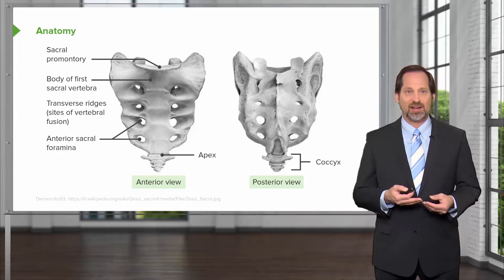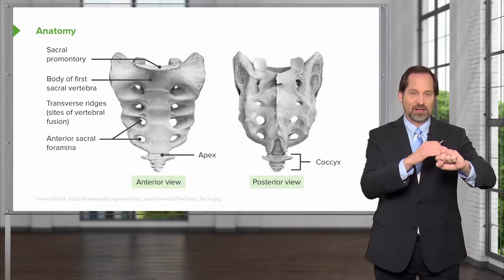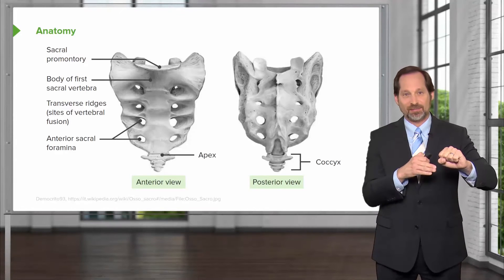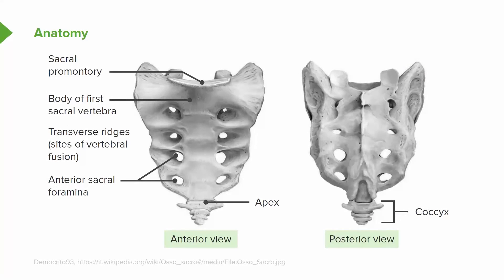Starting with the anatomy: here's the sacrum. You've got the top of the sacrum, which is flat and attaches to L5. The whole body is connected, and L5 and S1 are going to affect each other's function. We're going to focus on the sacrum, the sacral promontory, and its anterior connections.